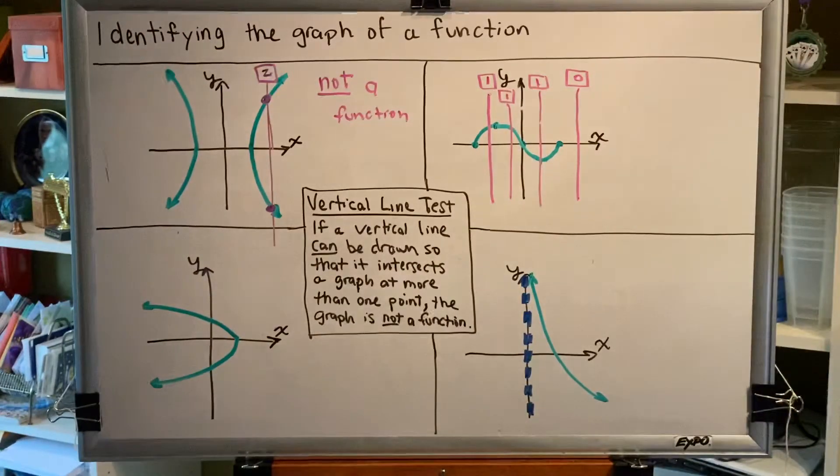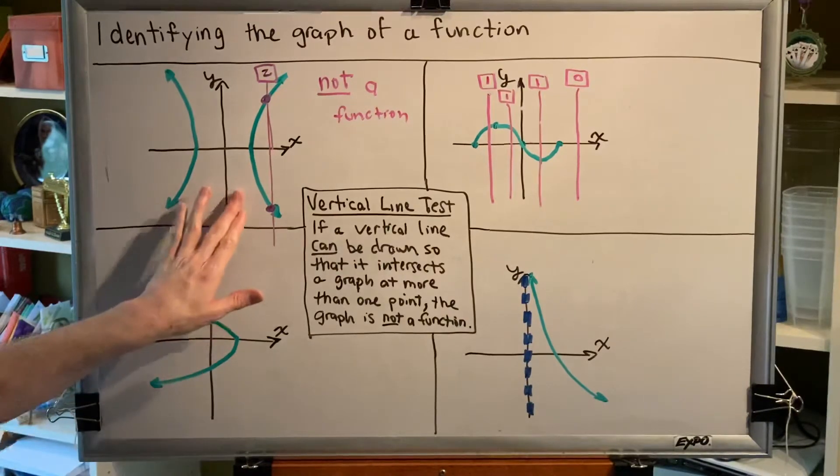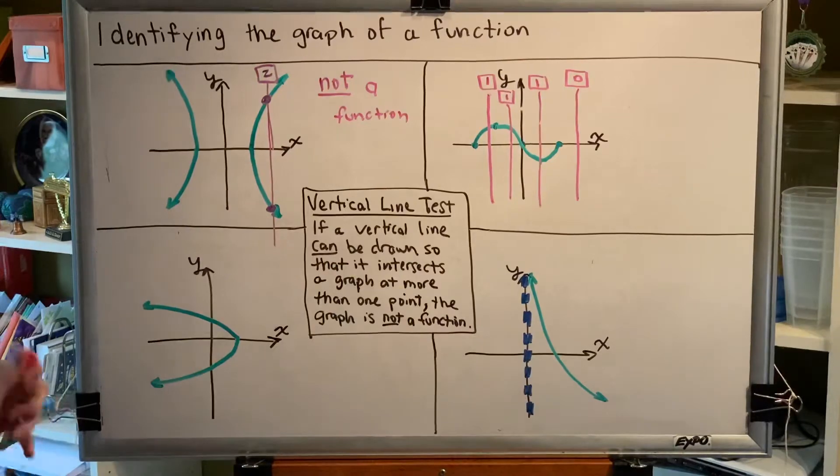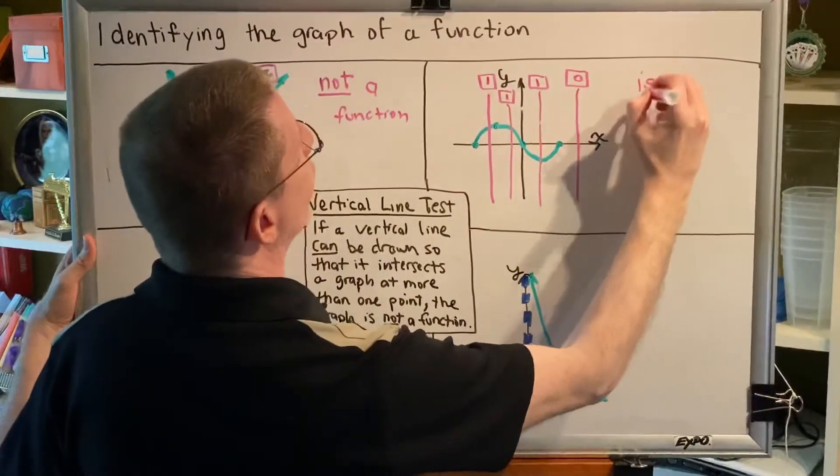So the key here is if you can intersect it at more than one, it is not a function. If you cannot find such a line that does that, then it is a function.